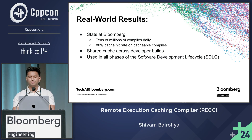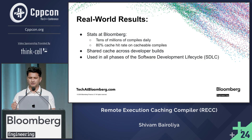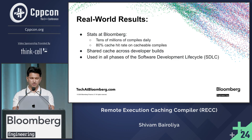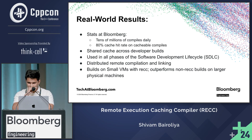Across different phases of the SDLC, builds run again and again — there's the developer local build and then there's the CI build. With REC, we can get cache hits across these different phases. If you run a build locally and then build it again in CI, we can get cache hits in CI and it will be super fast. We can also distribute compiles and links from a local machine to a distributed build farm, meaning builds on small VMs can outperform large physical machines.